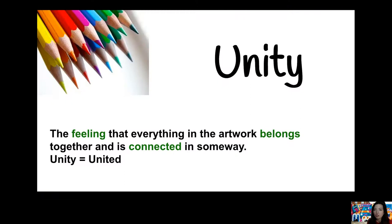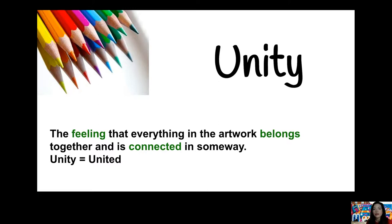So this week, we're learning about unity and balance. Let's look at unity. Unity is the feeling that everything in the artwork belongs together and is connected in some way. Unity means united, like the United States of America. When something's united, it goes together or it's working together. Works can have unity in color, shape, form, and line — like this artwork by Kandinsky. We talked about him earlier this year.